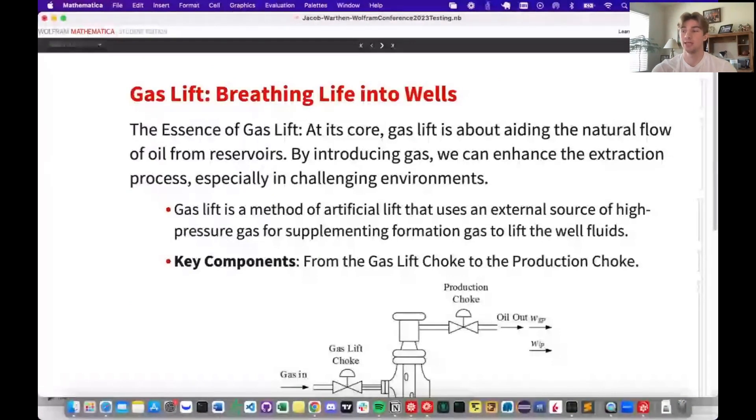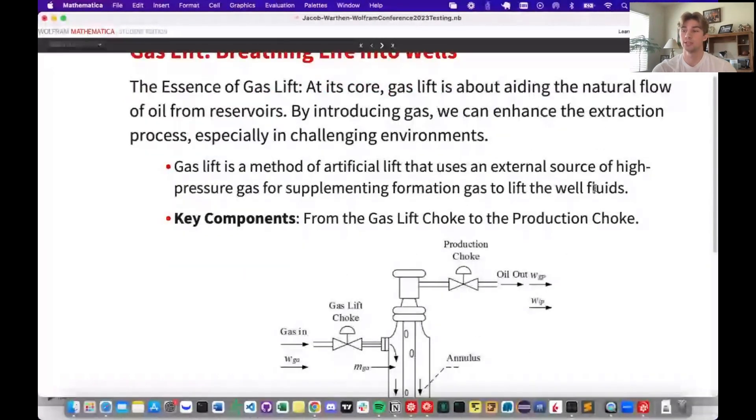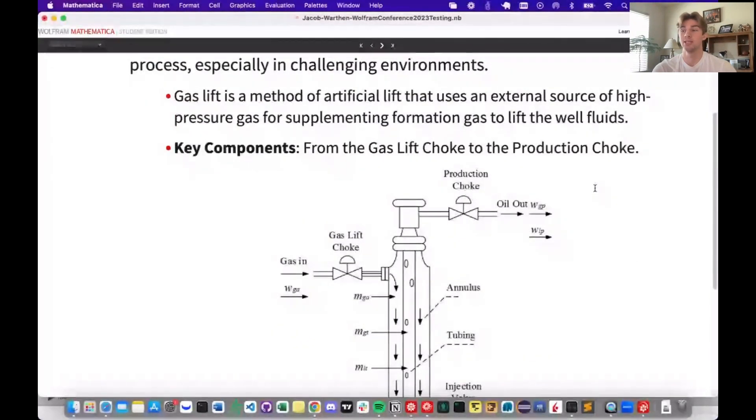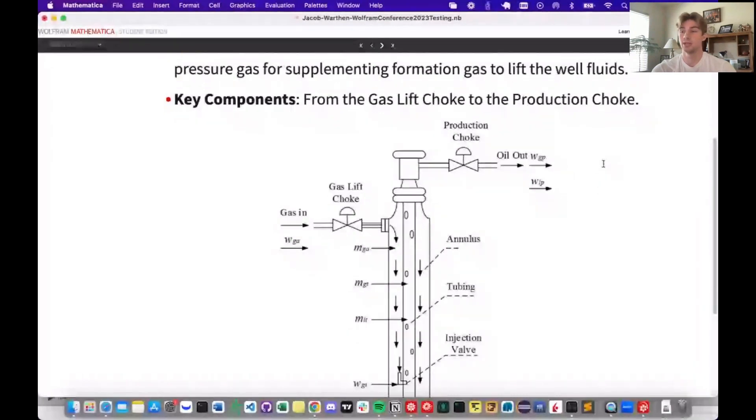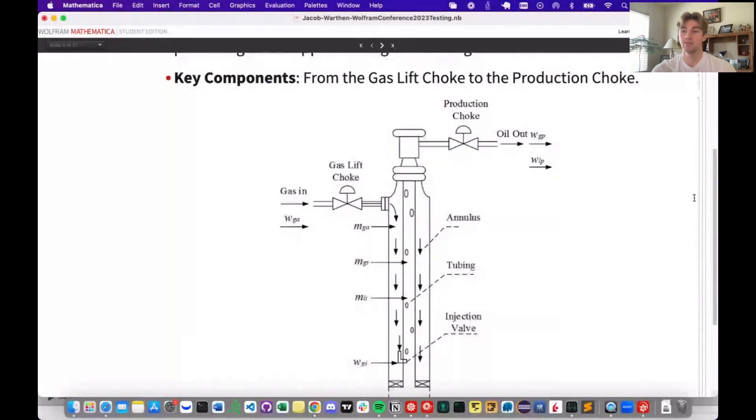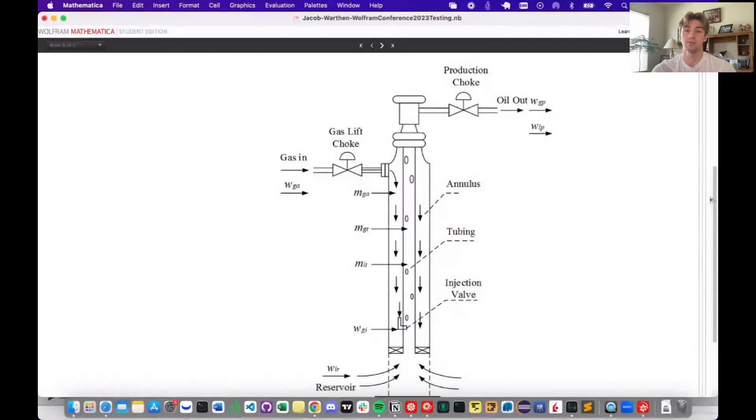The process might seem intricate, but at its essence, it's about enhancing what nature provides. When reservoir pressures are too weak to propel oil to the surface, gas lift steps in, supplementing this pressure by introducing high pressure gas into the wells. So how does it work? Let's follow the journey, beginning with the gas lift choke. This component controls the gas injection rate. The gas travels down, mingling with the reservoir fluids, decreasing their density, and thereby increasing their buoyancy. The blend of oil and gas then travels upwards through the production choke, which regulates the oil's journey to the surface. Our diagram here breaks it down visually. Each component plays a pivotal role, ensuring smooth flow and optimal extraction.